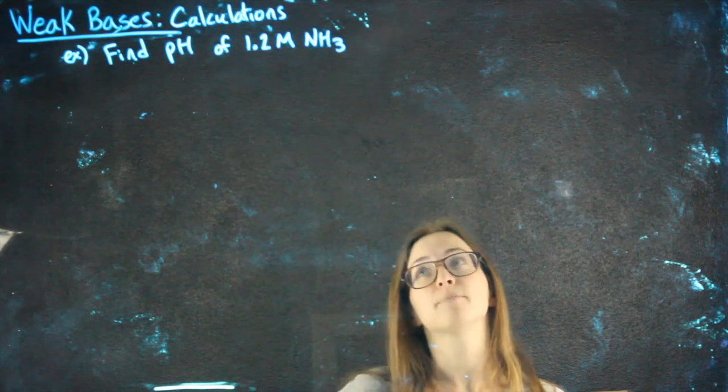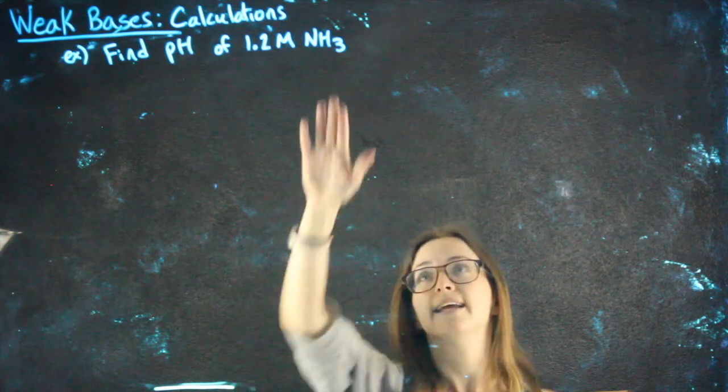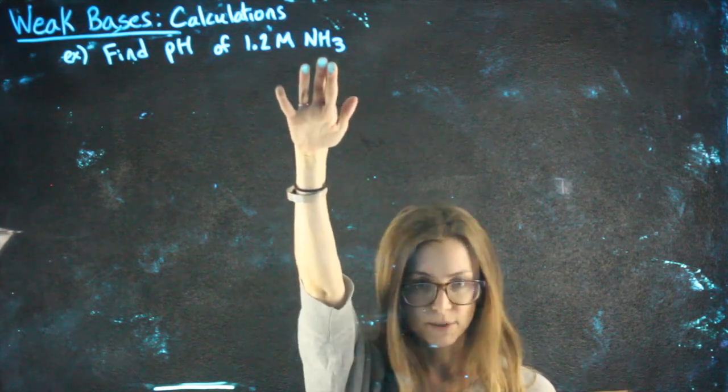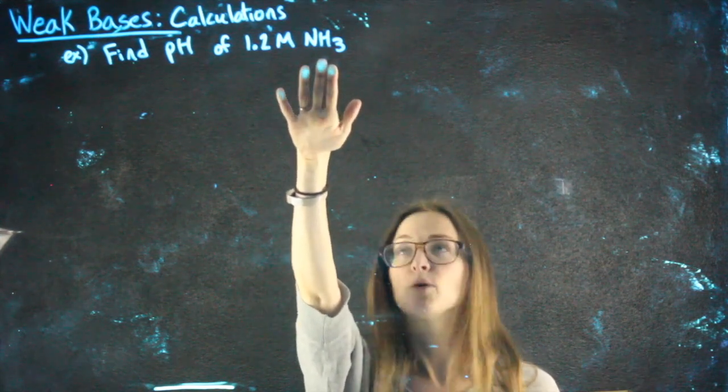So for example, if we're finding the pH of 1.2 molar NH3, NH3 is ammonia, it's a very common weak base, so you'll probably get familiar with it.